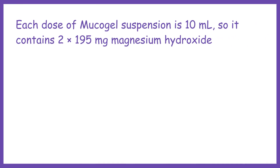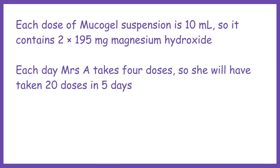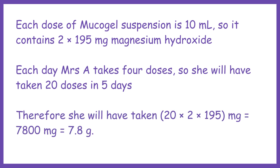Each dose of mucogyl suspension is 10 mL, so it contains 2 × 195 mg magnesium hydroxide. Each day Mrs. A takes 4 doses, so she will have taken 20 doses in 5 days.